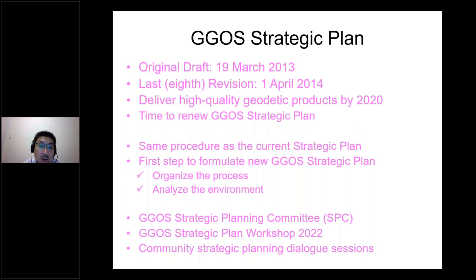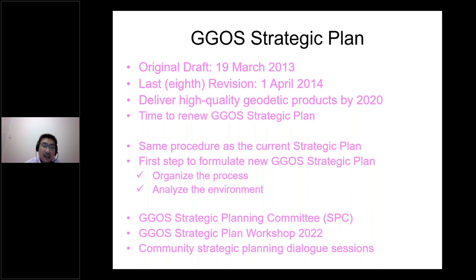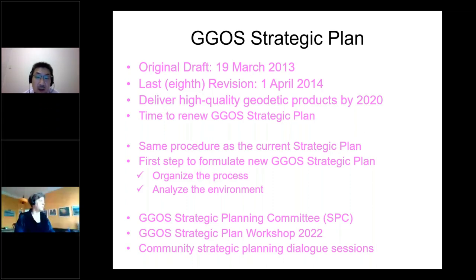We are planning to follow the same procedure as the current strategic plan to renew it. The first step to formulate a new GIGOS strategic plan is to organize the process and analyze the current environment around GIGOS. We are planning to do three things as the first step to formulate the GIGOS strategic plan.